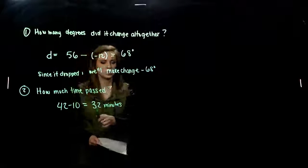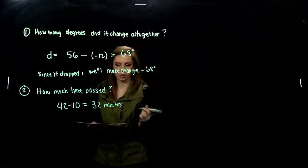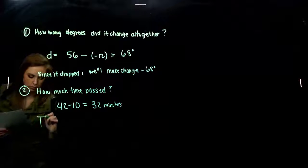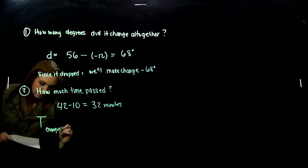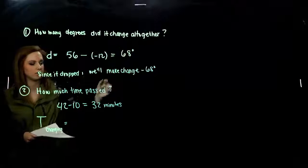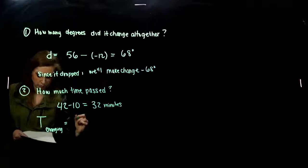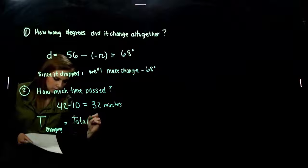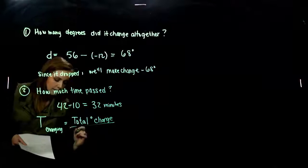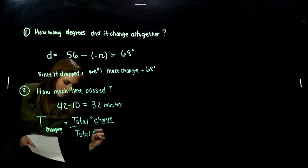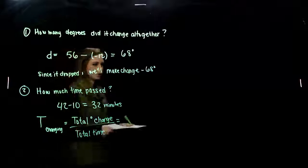So in 32 minutes, we dropped 68 degrees. So per minute, what are we talking about? So the total, the temperature, the total changing, is going to be what? I want a unit per unit minute. So total change in degrees, total degree change, divided by total time, will give us a unit rate of change.